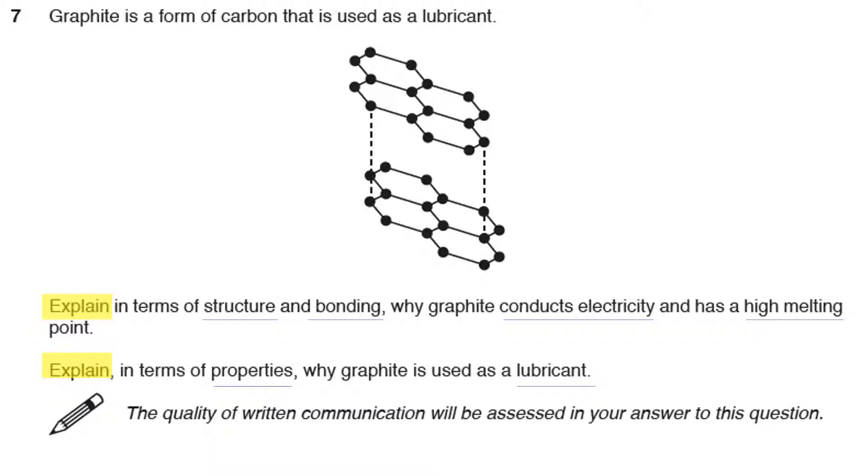There's a diagram here—the examiners have given you a diagram giving you a nice hint of some of the things they want you to write about. Now this is a six mark question and it's in two parts, so I think we should aim to make about four marks for the first part and maybe two for the second.